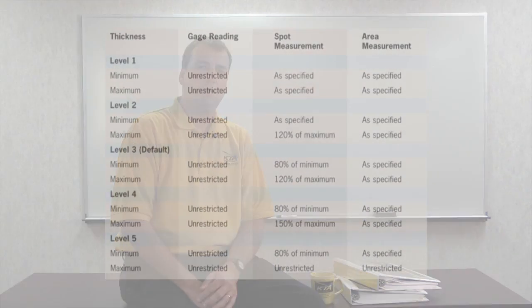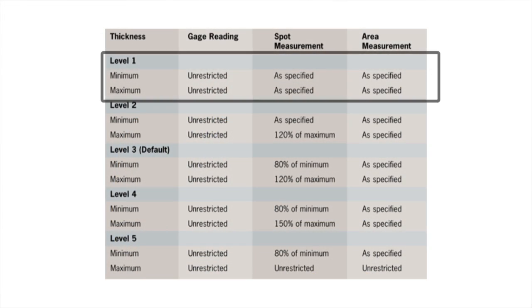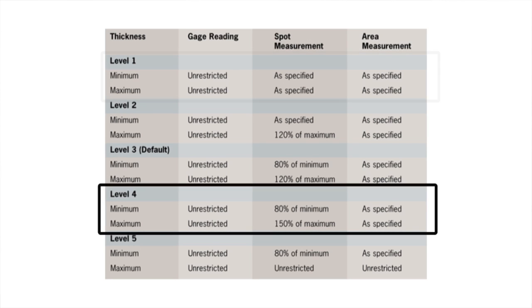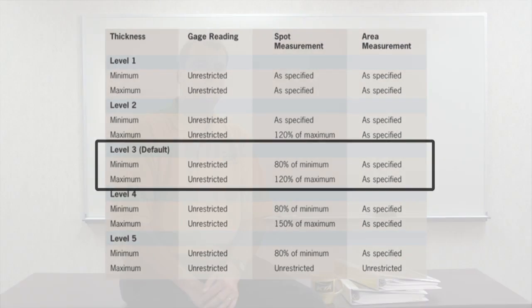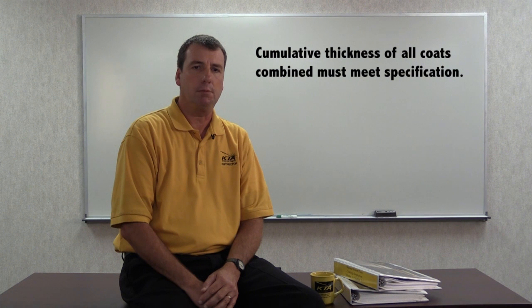The most recent version of SSPCPA2 addresses this and other options in a coating thickness restriction level table, which is shown here. Level 1 is the most restrictive and does not allow any deviation from the specified minimum and maximum thickness for either spot or area measurements, while level 4 allows spot measurements to underrun the specified minimum by 20% and overrun the maximum thickness by 50%. If no restriction level is specified, then level 3 is the default level. For the purpose of final acceptance of the total dry film thickness, the cumulative thickness of all coating layers in each area must be no less than the cumulative minimum specified thickness and no greater than the cumulative maximum specified thickness.